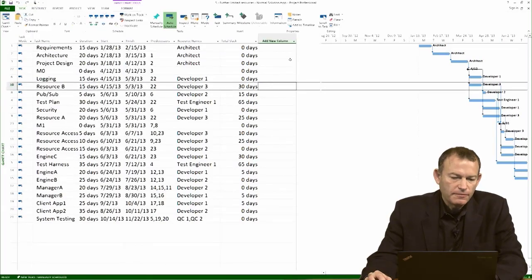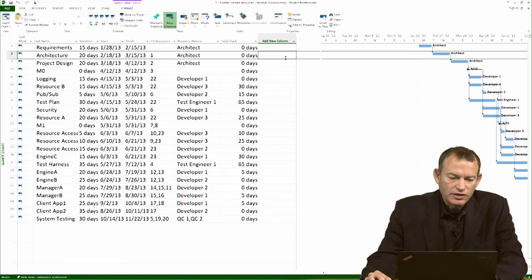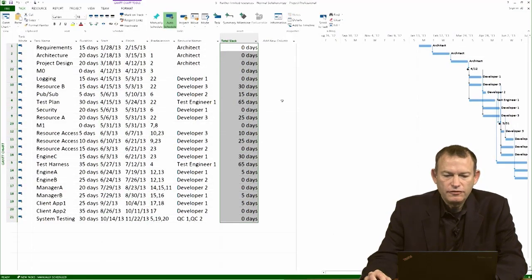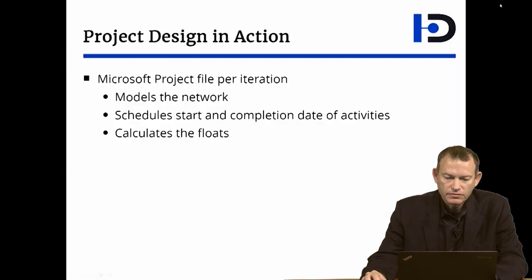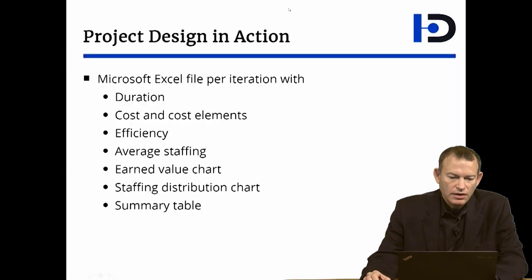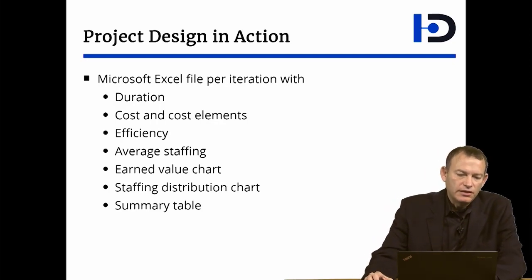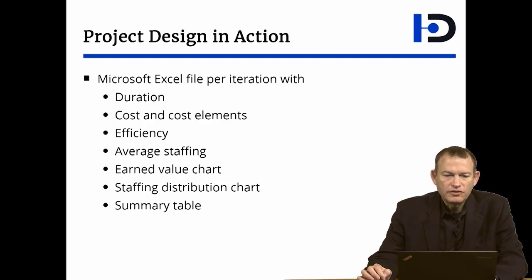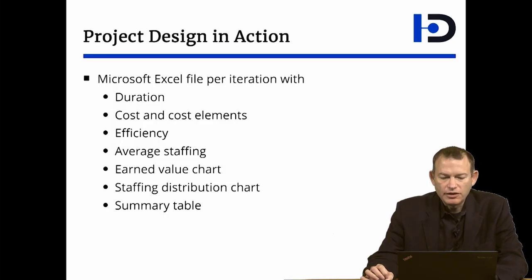It's a simple project file. For the project design, the only information we want out of it is the finish date for the earned value charts and the float for the various risk calculations. For each iteration, the bulk of the analysis is done in Excel. Each one of those Excel files has a summary table that shows the duration, the cost, and efficiency — as well as the staffing distribution chart, the earned value chart, and how everything was produced.